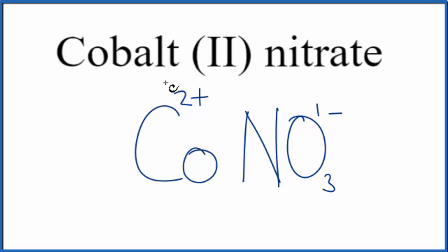The word 'ion' doesn't follow this here, so we know that the net charge has to be zero. We can do something called the crisscross method to figure that out. We can take the two, move it down here, and the one over here. We don't write the one by convention, and let's get rid of the charges here.